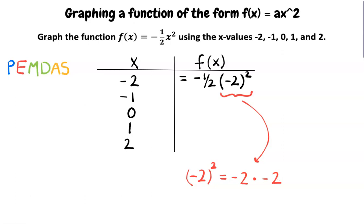So, (-2)² equals -2 times -2. Two negatives multiplied together equals a positive, so (-2)² simplifies to 4.